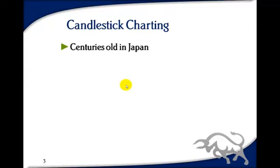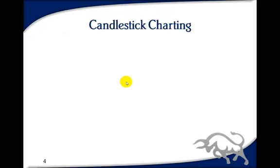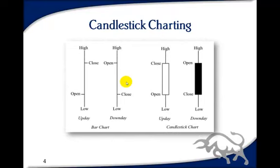Candlestick charting has been used for centuries in Japan, developed around 1870 or perhaps earlier by a rice trader who used it to make many profitable trades. It was used in Japan for a very long time, but no one in the West came across it until Steve Nison discovered it in the 1980s and wrote a book on candlestick trading around 1990. He was the first person in the West to introduce it, and Greg Morris later also wrote books on the subject.